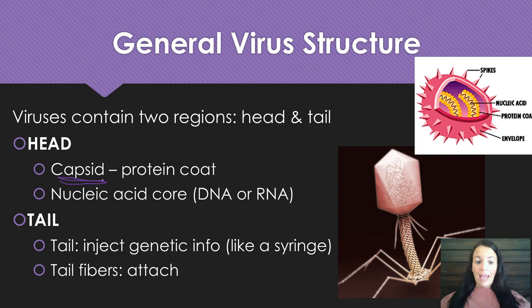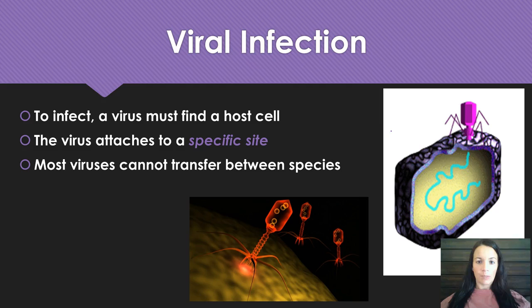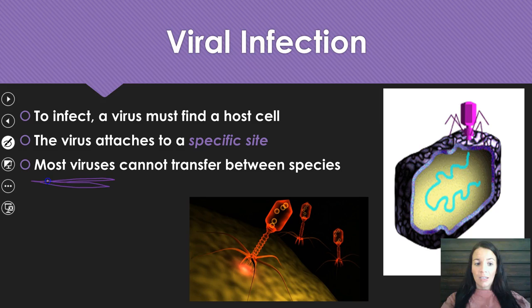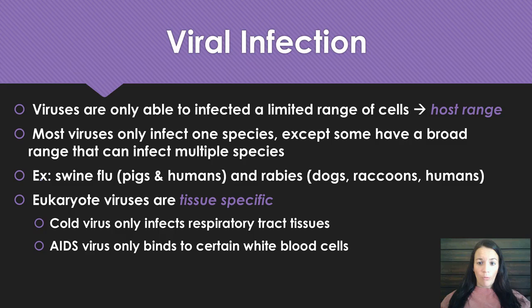Both pictures here are examples of viruses but different types. For viral infection in general, they can't reproduce on their own, so they have to find a host cell and attach to a specific site on it. Something important to note is that most viruses cannot transfer between species — most viruses are specific to certain species. This is called a host range: a limited range of cells in particular species.